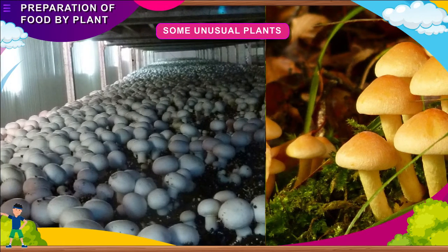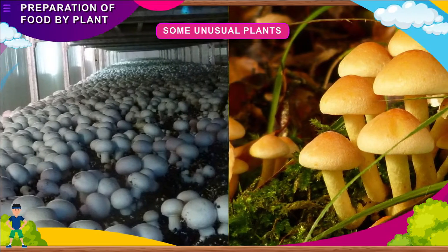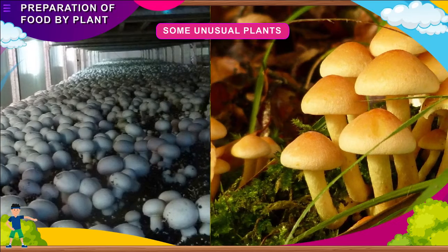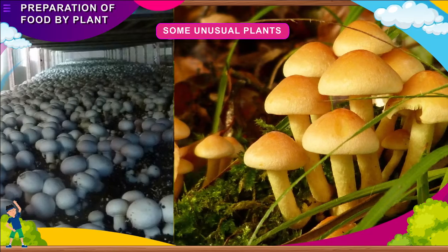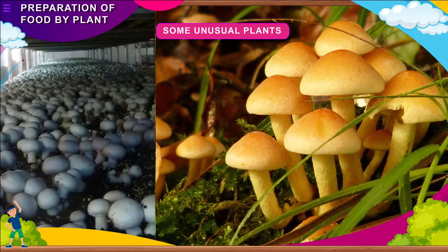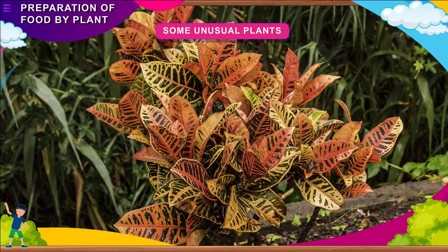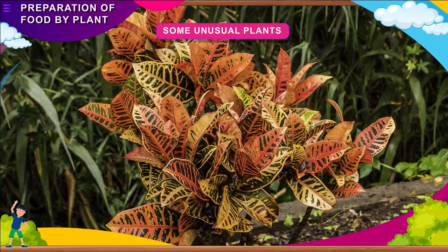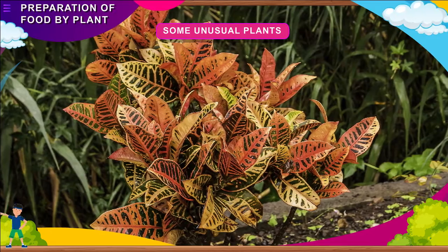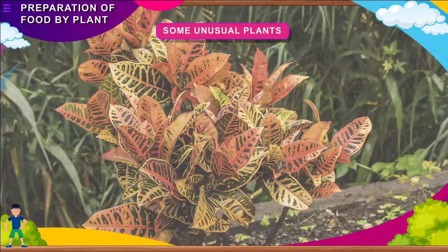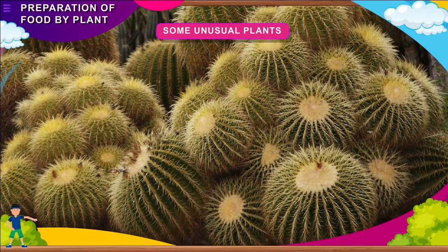Some unusual plants: Some plants like mushrooms and moulds are non-green plants. They do not have chlorophyll, so they cannot make their own food. They get their food from dead and decaying plants and animals. Some plants have colored leaves — the leaves of a croton plant are dark in color. They also have chlorophyll, but the red pigment hides their color, and photosynthesis takes place in such plants as well. A cactus has green stems, and photosynthesis takes place in its stem.